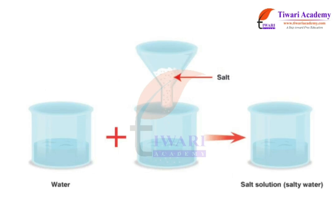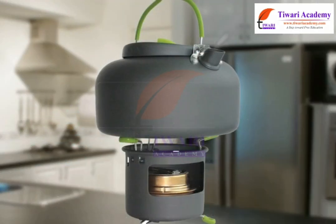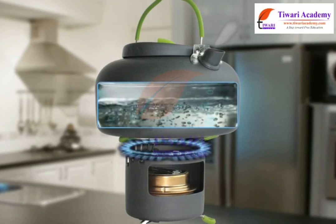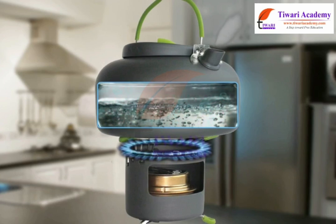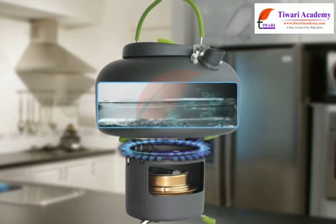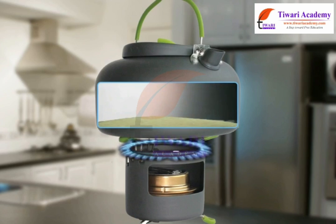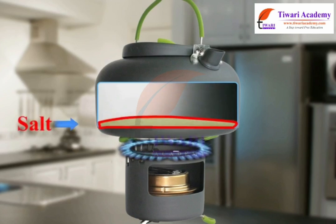Separating a mixture of salt and water. Take the mixture of salt in water in a beaker and cover it with a lid. Now, gently heat the beaker for some time. Heating transforms water quickly into vapor that escapes from the surface of the water. Continue heating till all the water gets converted into vapor and only salt is left behind in the beaker.